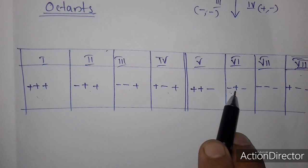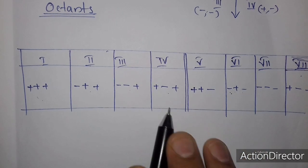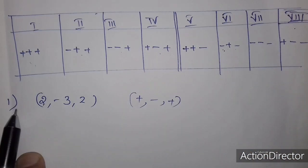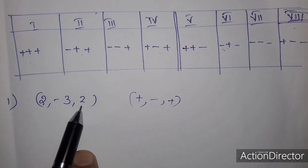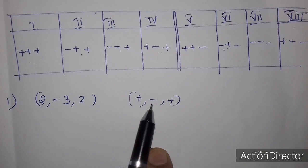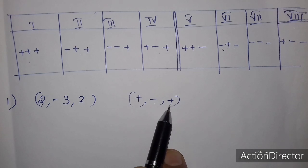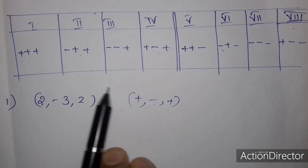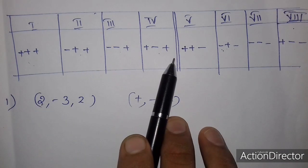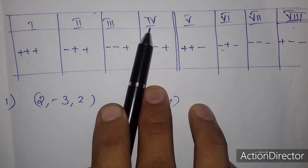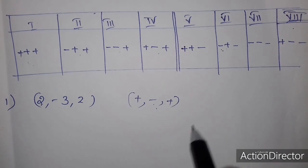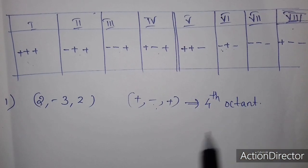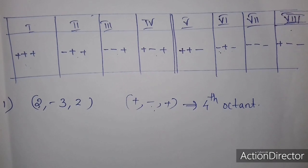Now let's look at the octants. We have plus, minus, and sign patterns. For a point with coordinates (2, -3, 2), the signs are plus, minus, plus. Looking at the sign pattern, the last sign is plus. Checking our octant table, plus minus plus corresponds to the 4th octant. So the answer is 4th octant.